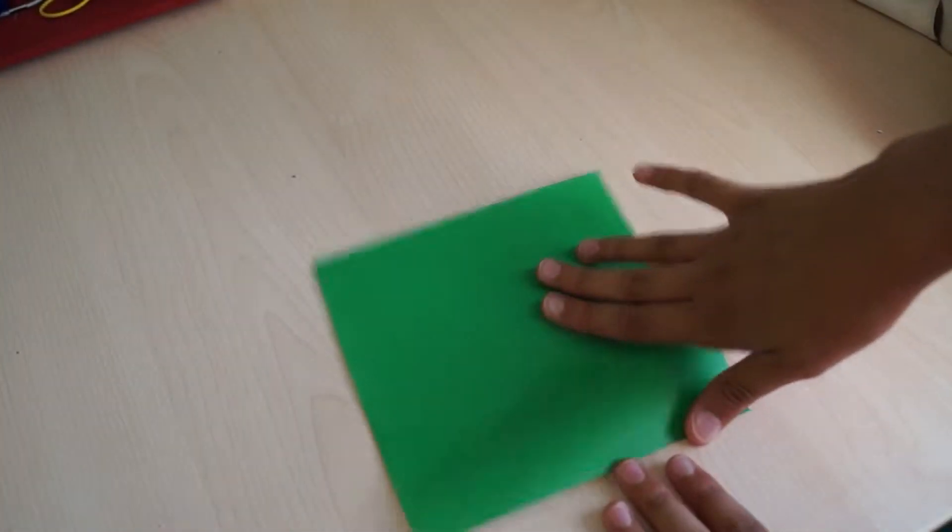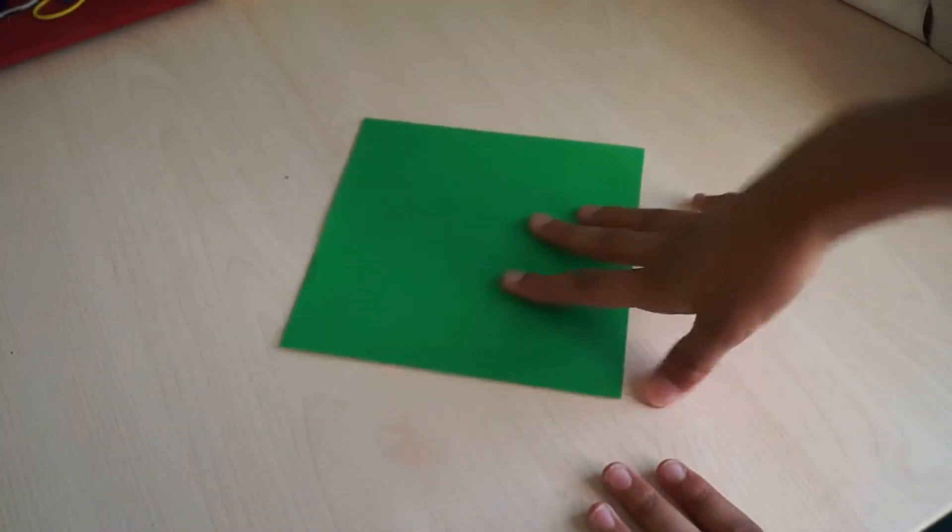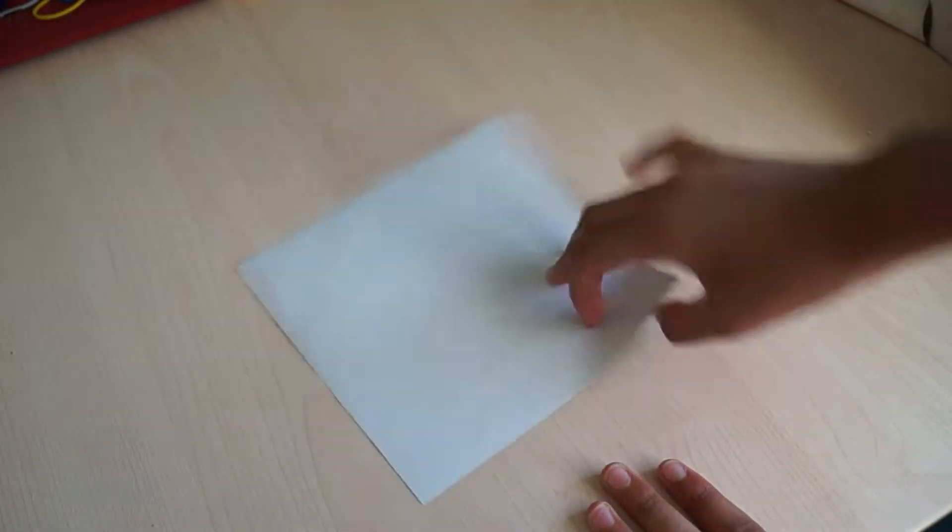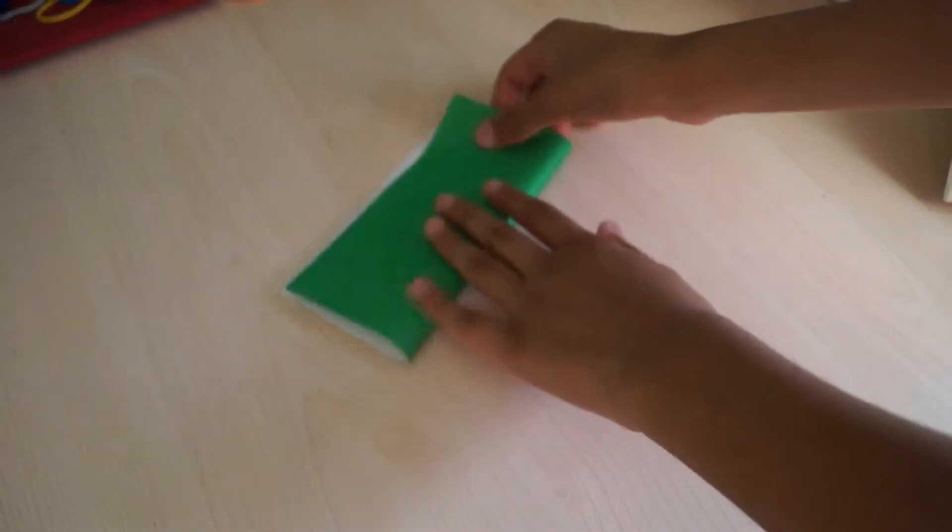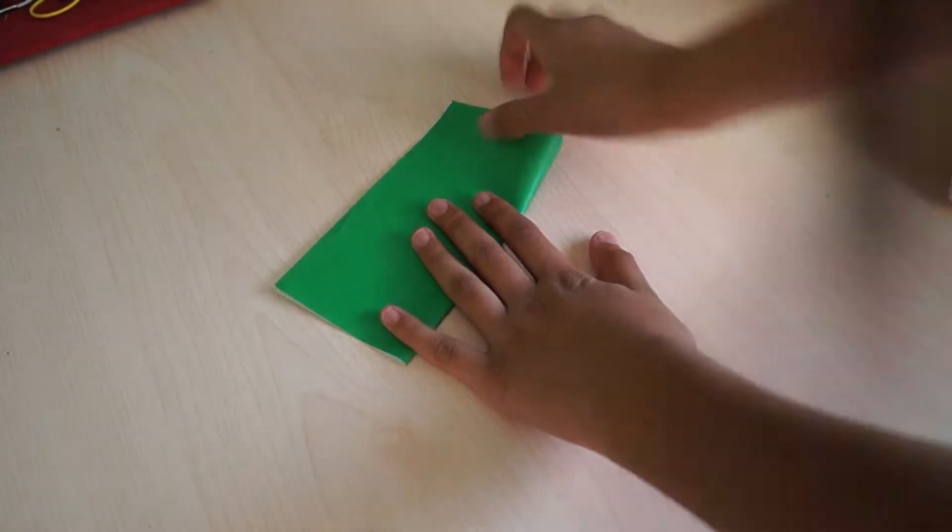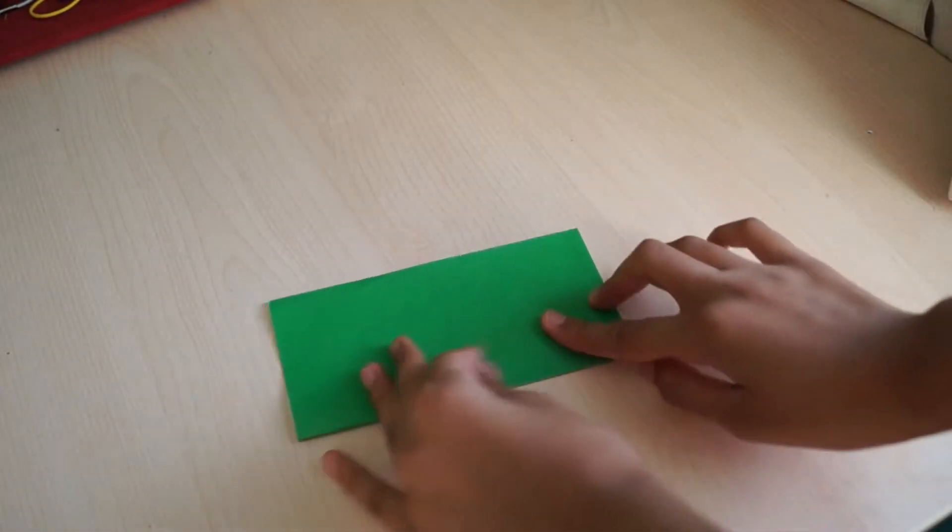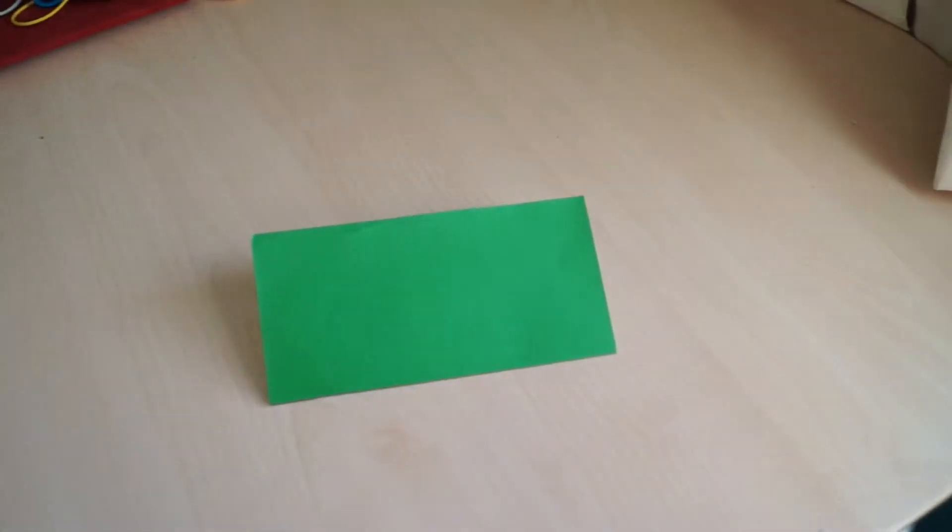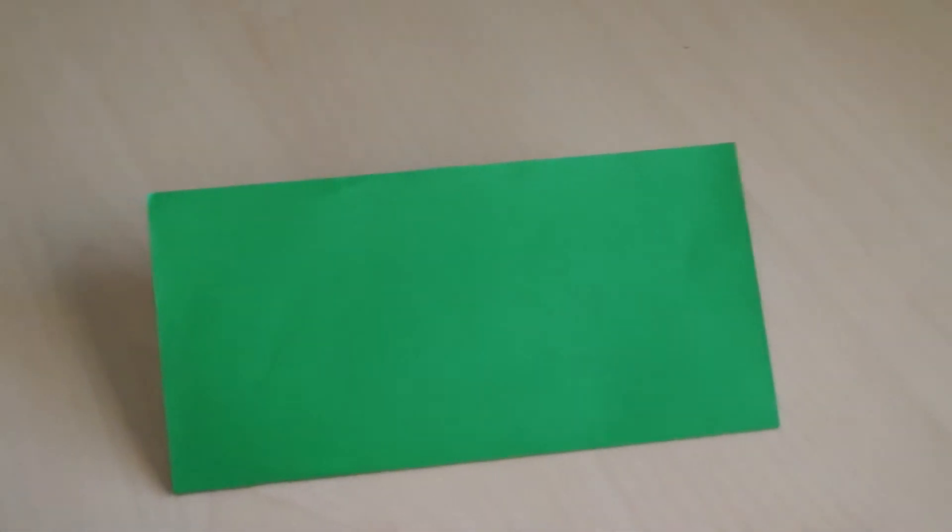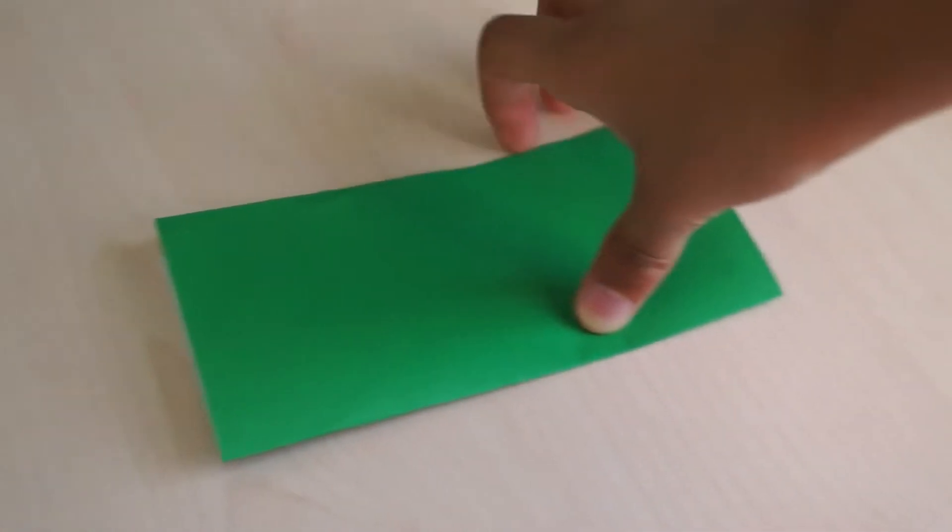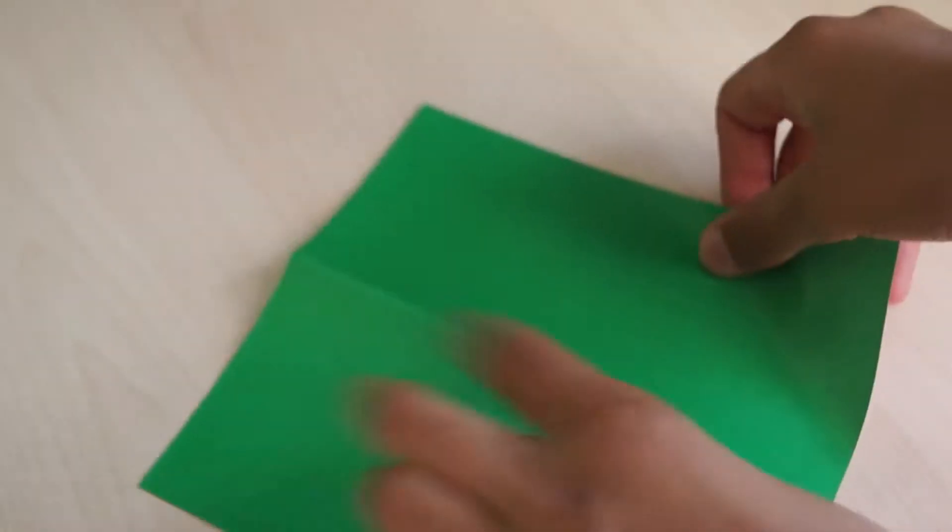You're going to start off with a square piece of origami paper, white on one side and colored on the other. We're going to start white side facing up and we're going to fold in half like this. Fold that, and then fold it the other way.